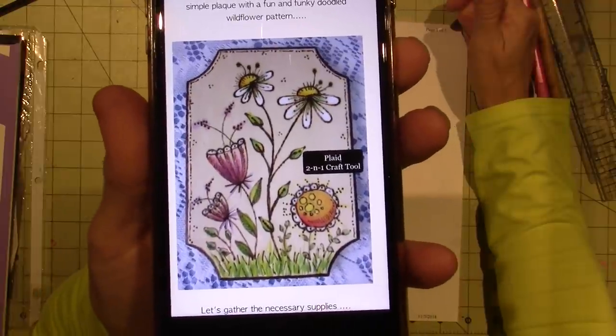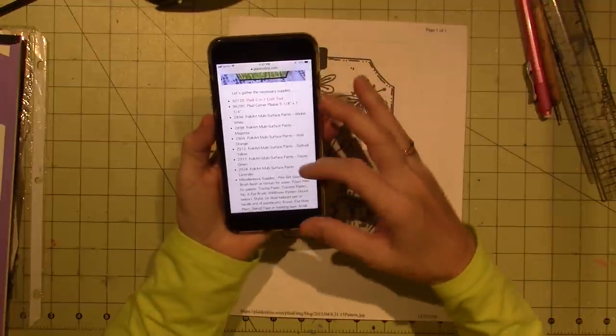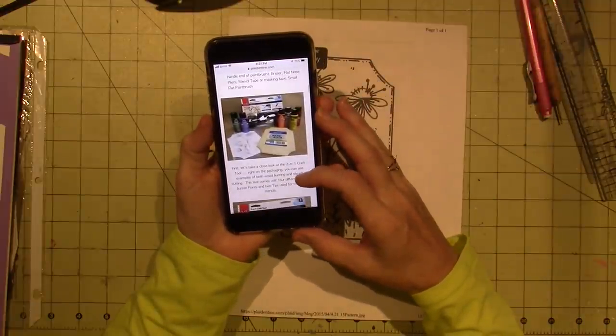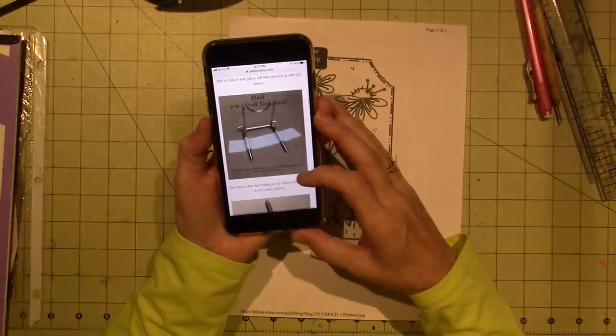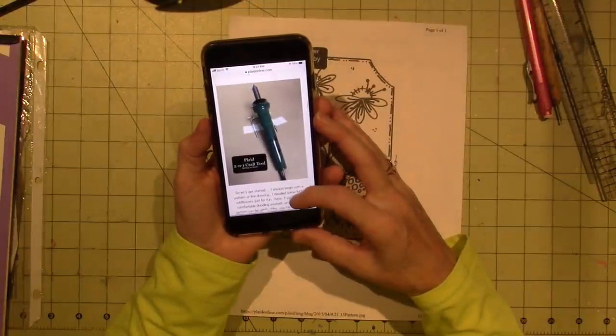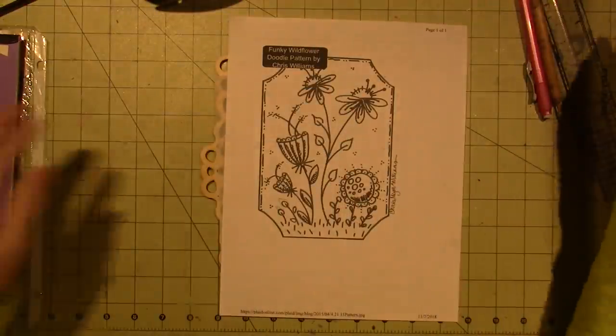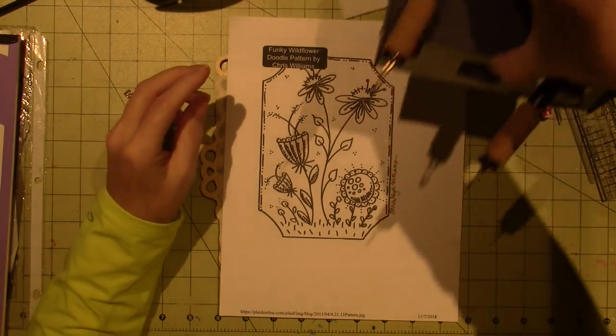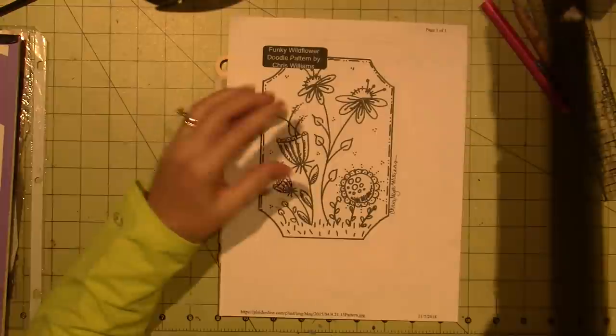This is a pattern that I got off of plaidonline.com and here's the little project that they did. It's some doodle flowers and I just thought it was so cute. They use the plaid 2-in-1 craft tool, but I'm going to be using my Coalwood Super Pro 2 and it's heating up right now.